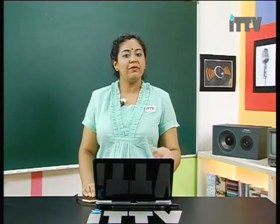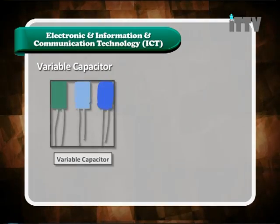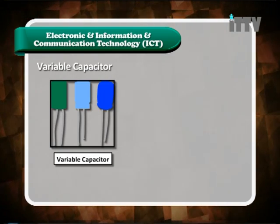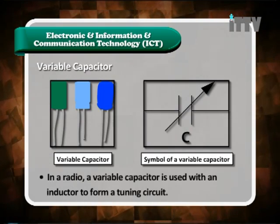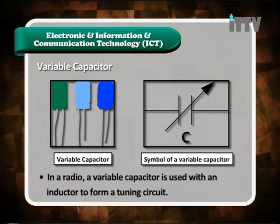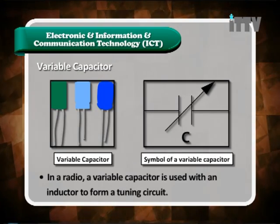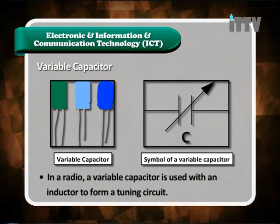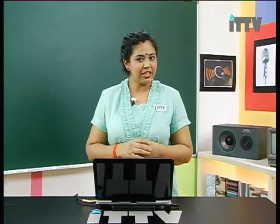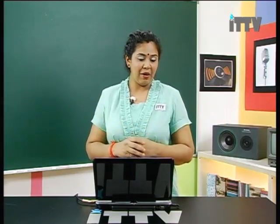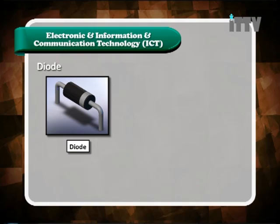Let's move on to the variable capacitor. Here is a picture of a variable capacitor and also its symbol. In a radio, a variable capacitor is used with an inductor to form a tuning circuit. The function of a variable capacitor is used as part of the tuning circuit. A tuning circuit allows us to listen to different frequencies and different stations on our radio.